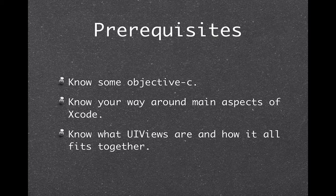There's some stuff you need to know for this tutorial, at least to understand everything. You've got to know some Objective-C, and you've got to know your way around the main aspects of Xcode. You've got to know a little about UIViews and how it all fits together with the parent and child views — the sub-views — and how they're drawn on the screen, the X and Y coordinates. But it's okay if you aren't 100% clear on these aspects, because a lot will be illustrated by this tutorial.